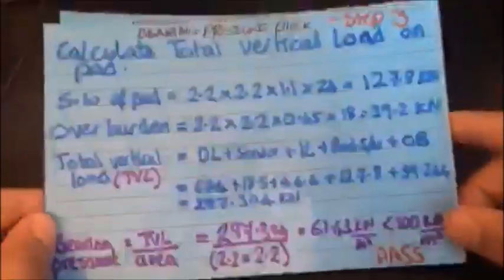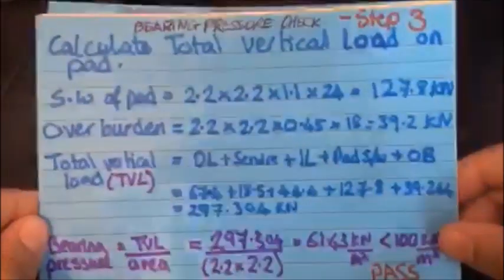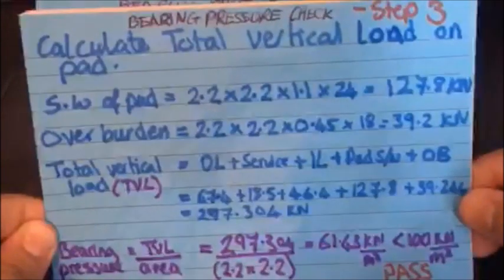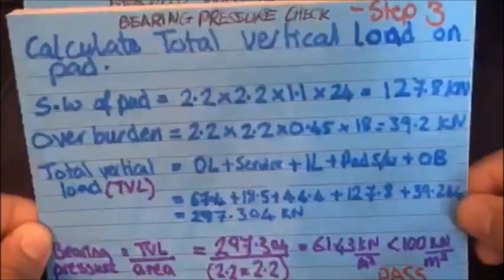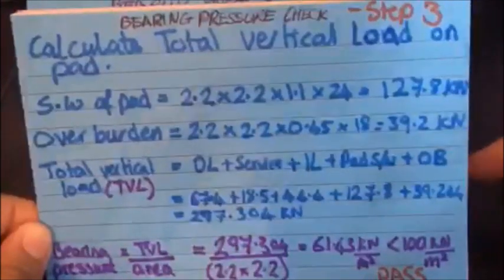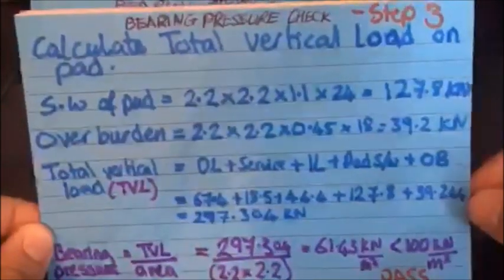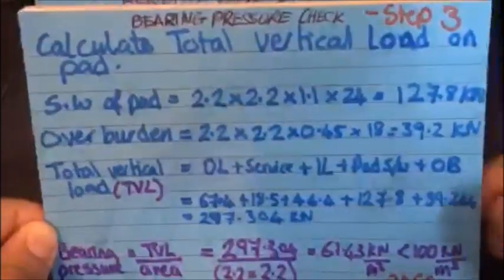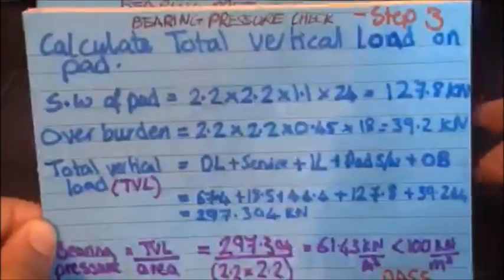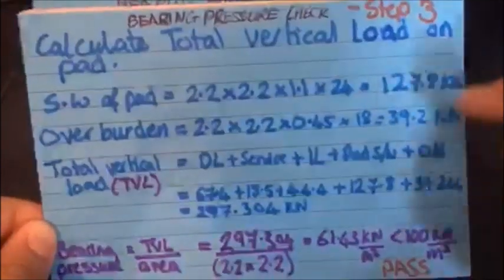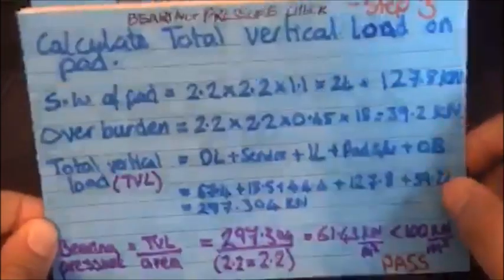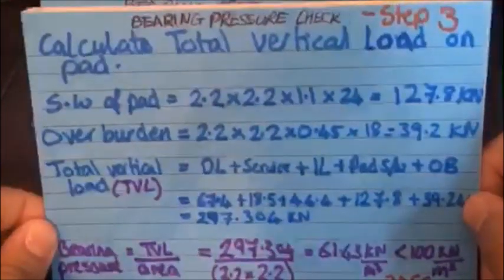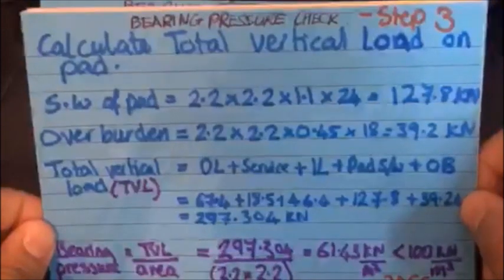Okay, so let's move on to the next. We're still in step three because we're doing the bearing pressure check. The first thing to do is to calculate the total vertical load on the pad. This would include the self weight of the pad, the overburden. The overburden is known to be the soil above the pad because remember, the pad is going to go into the ground as the pad is a foundation. And I said that we've got 150 millimeters of soil above the pad, so that's what the overburden is.